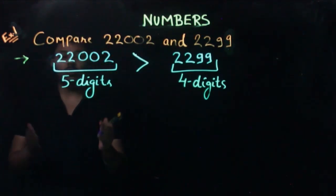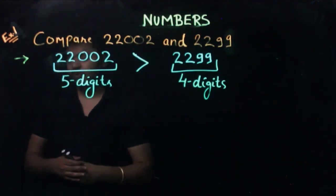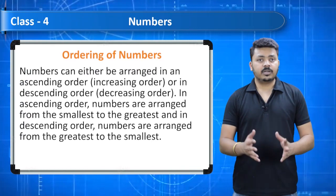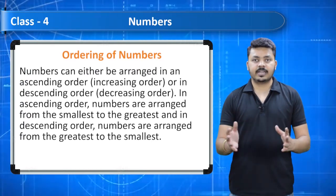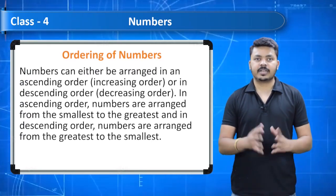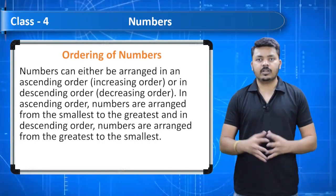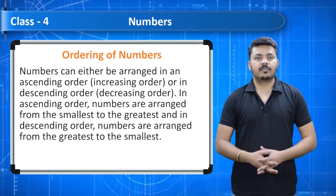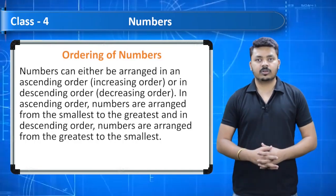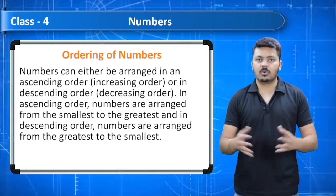Ordering of numbers: numbers can be arranged in ascending order — that is, increasing order — or in descending order — decreasing order. In ascending order, numbers are arranged from the smallest to the greatest. In descending order, numbers are arranged from the greatest to the smallest.